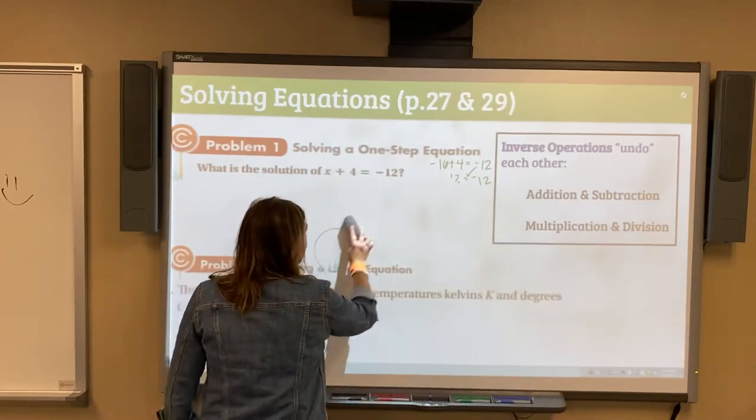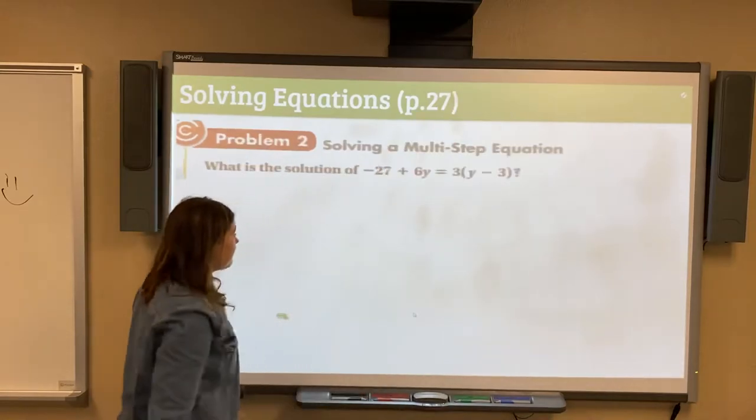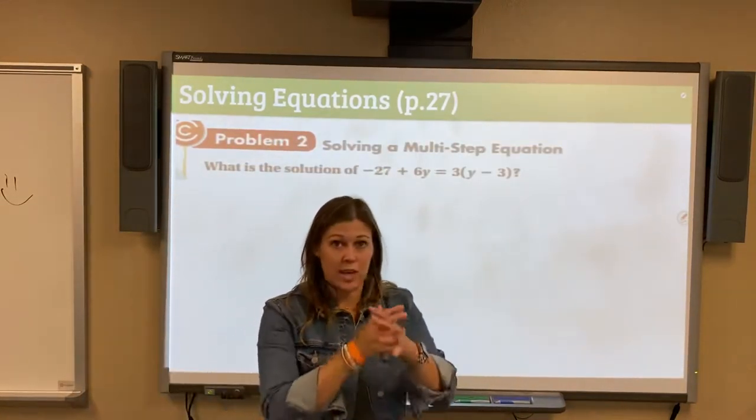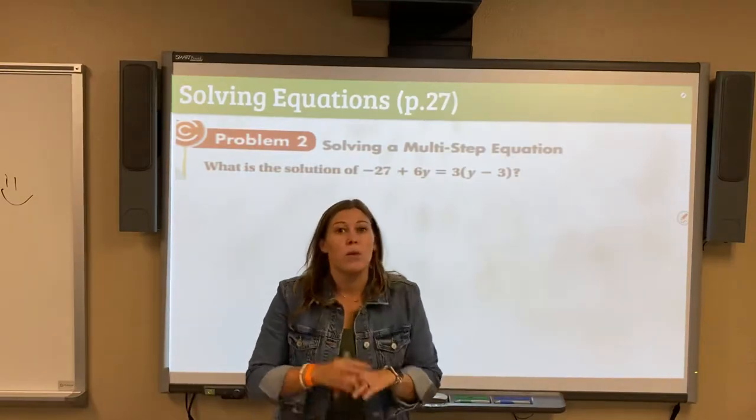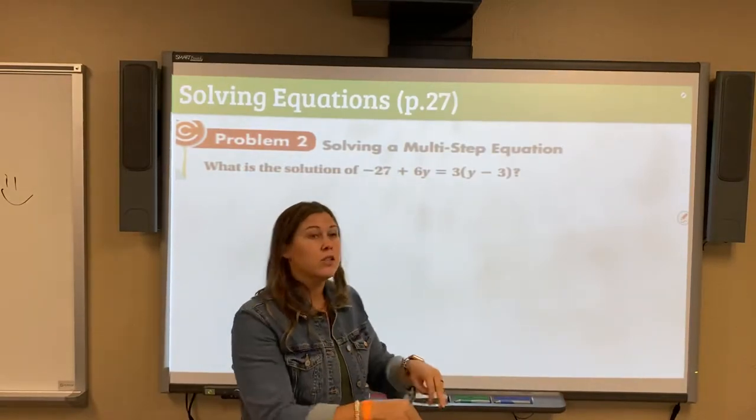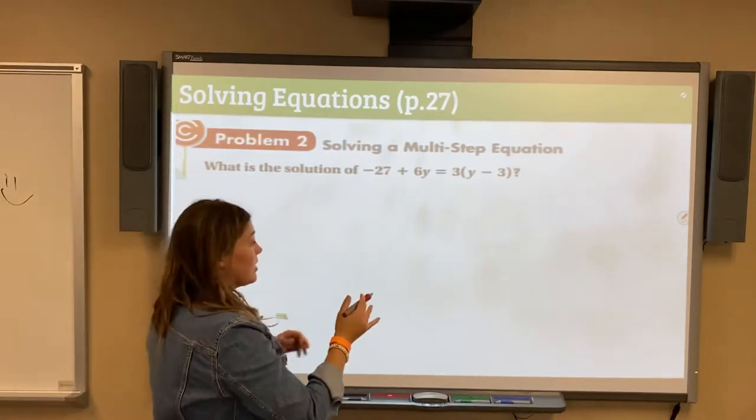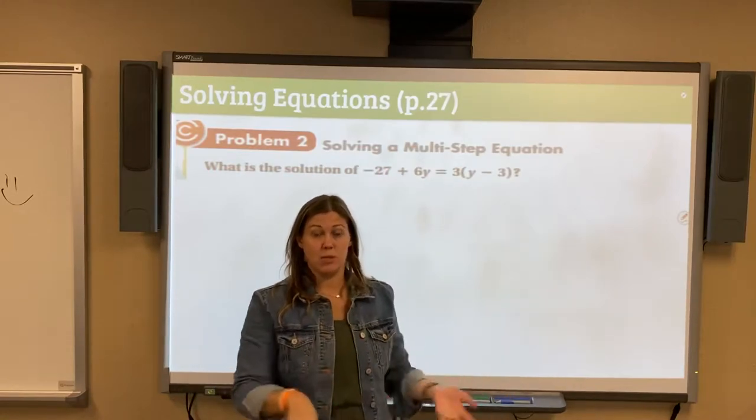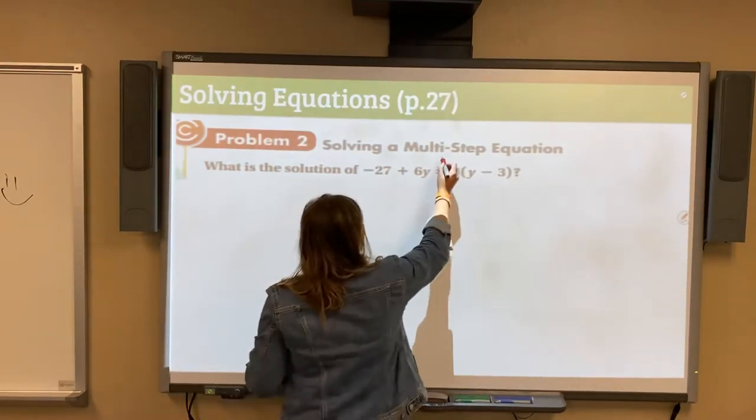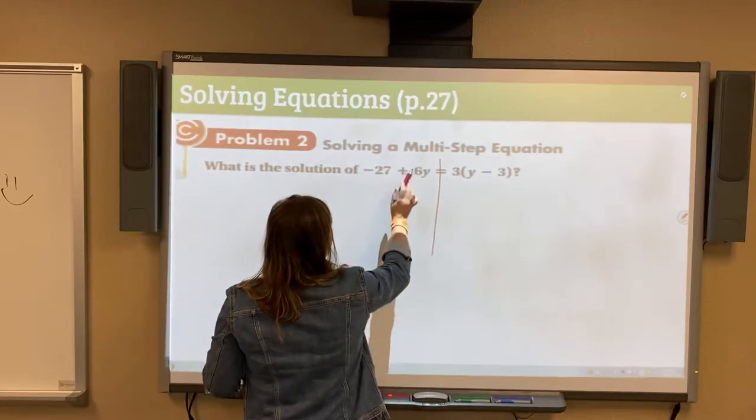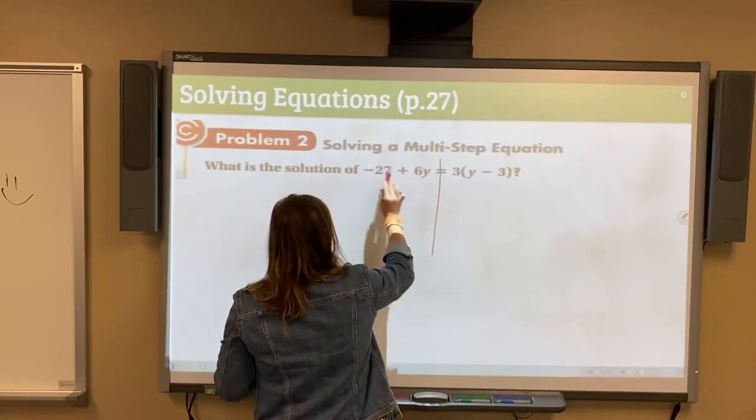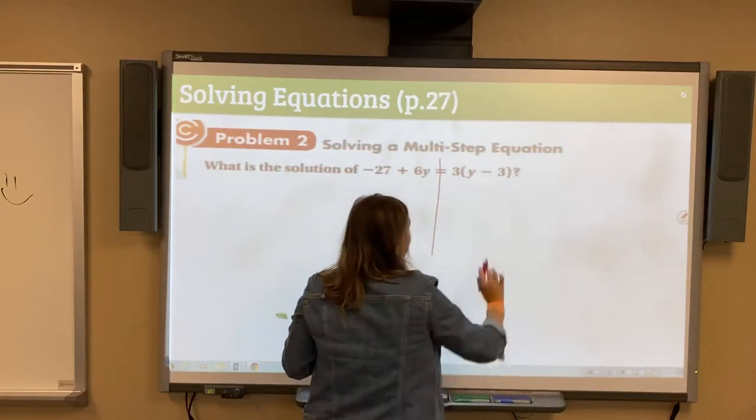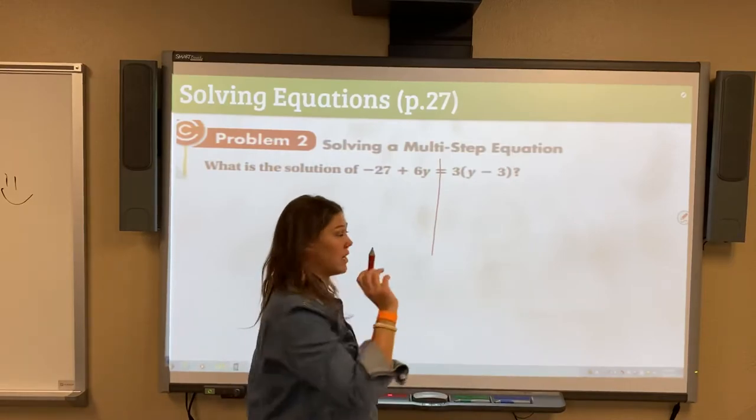I'm going to erase my drawings. Next page, solving multi-step equations. Still want to get Y, or in this case it's Y. Get whatever variable by itself. What you need to do is always simplify each side and then move variables to one side, numbers to the other. We draw our fence. If we look on the left, negative 27 plus 6Y, we can't do anything there. But this 3 multiplied by Y minus 3, we can distribute that. And we need to before we combine.